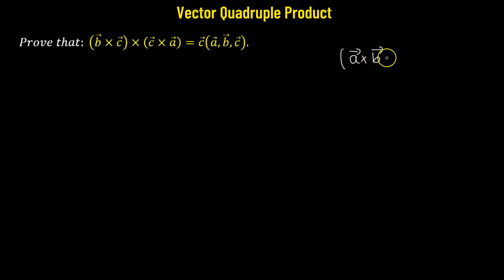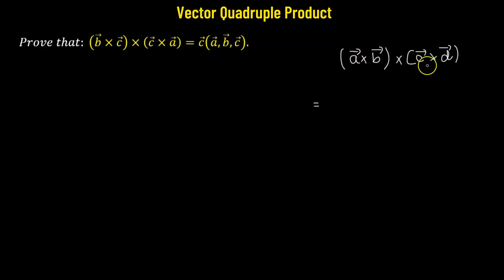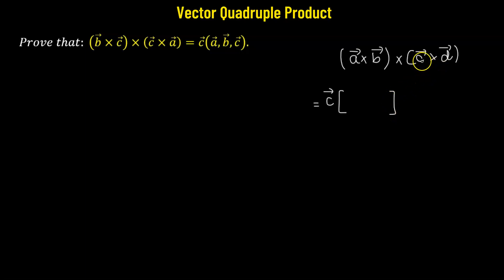We have the cross product between a and b, and this is crossed with c and d. This vector can be simplified. Reading from left to right, we come to the third vector, which is vector c. This is multiplied by the scalar triple product between the remaining vectors — starting with vector c, then vector d, then back to the beginning with vector a followed by vector b.